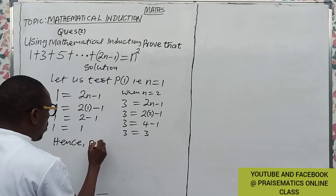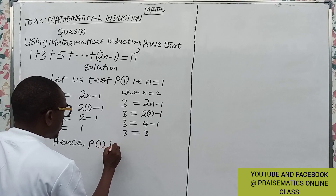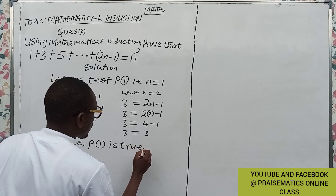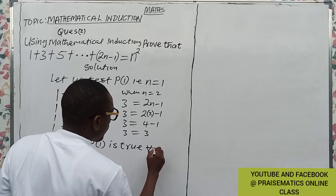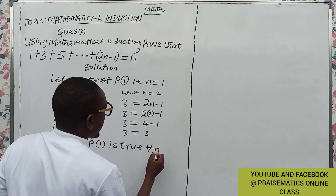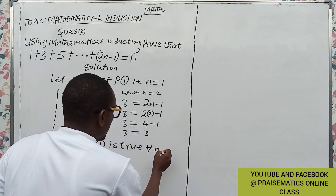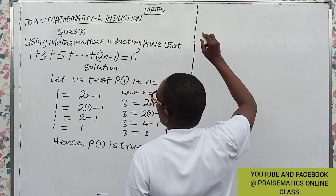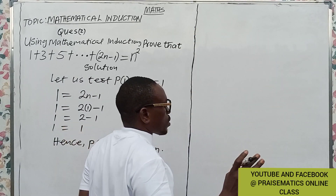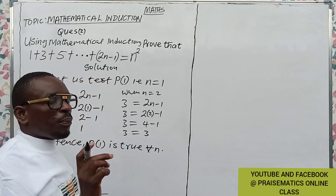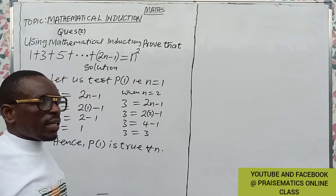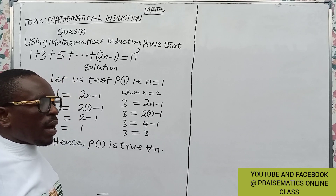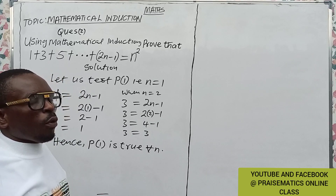P(1) is true for all positive integers n. Now for the second step — we have three principles: step one, we test for P(1), that is when n = 1; step two, we test for P(k), that is when n = k.